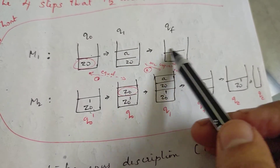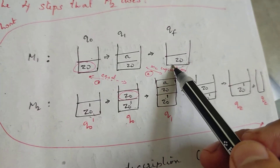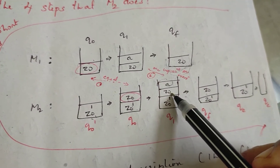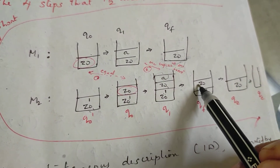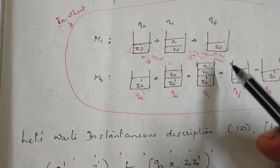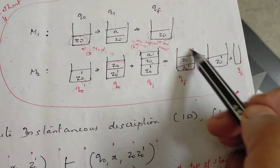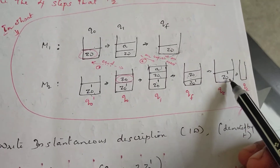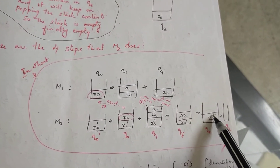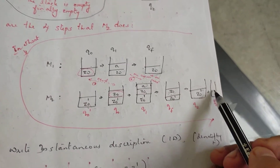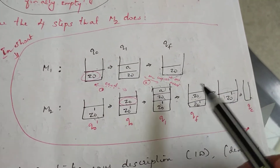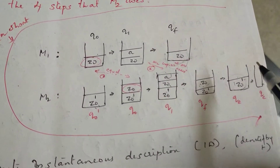As soon as M1 reaches a final state, M2 goes to qe without any input. Then qe, without any input symbol and whatever is on top of the stack, goes to qe again by consuming — that is, popping all stack elements until the stack is empty.